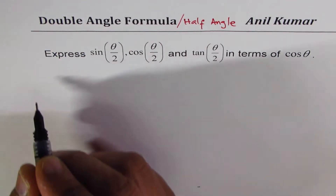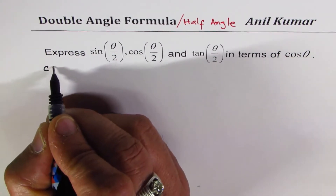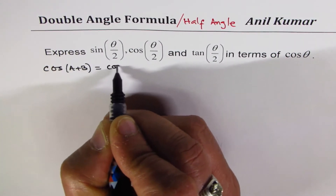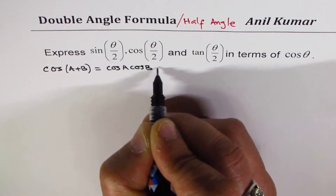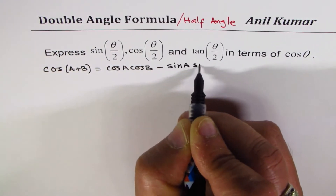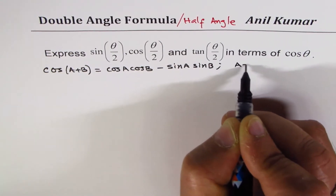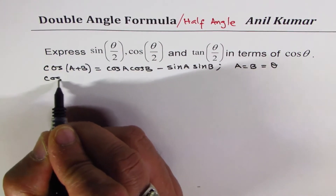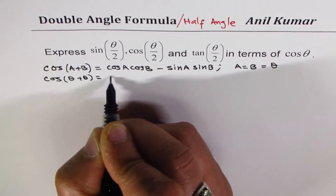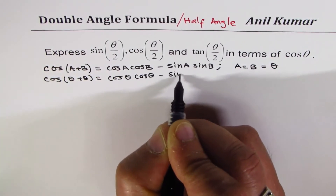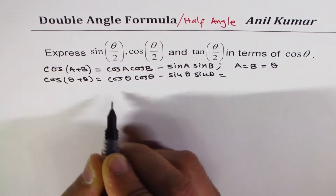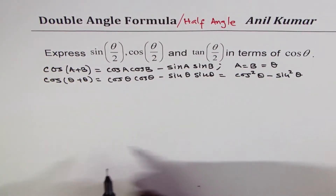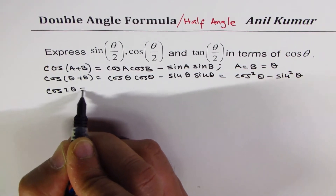Let's begin with cos 2θ to derive all these formulas. We know cos(A + B) = cos A cos B − sin A sin B. Now if I substitute a = b = θ, I get cos(θ + θ) = cos θ cos θ − sin θ sin θ, which equals cos²θ − sin²θ.